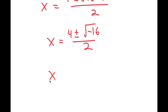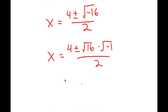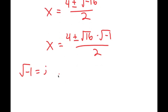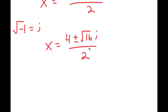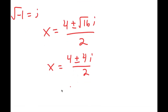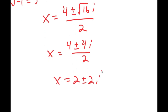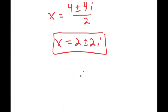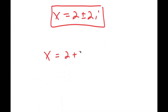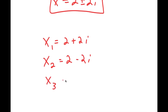The square root of negative 16 can be rewritten as the square root of 16 times the square root of negative 1 over 2, and the square root of negative 1 is i. So x equals 4 plus or minus the square root of 16 times i over 2. Since the square root of 16 is 4, I get x equals 4 plus or minus 4i over 2, which simplifies to 2 plus or minus 2i. So my three solutions are x equals 2 plus 2i, x equals 2 minus 2i, and x equals 2.